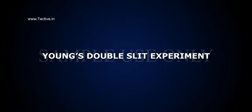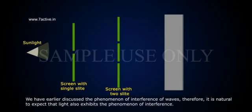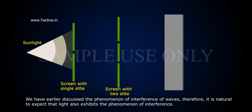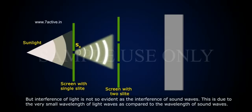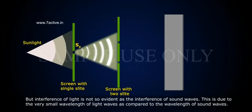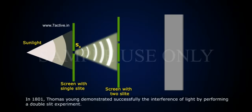Young's double slit experiment. We have earlier discussed the phenomenon of interference of waves. Therefore, it is natural to expect that light also exhibits the phenomenon of interference. But interference of light is not so evident as the interference of sound waves. This is due to the very small wavelength of light waves as compared to the wavelength of sound waves.